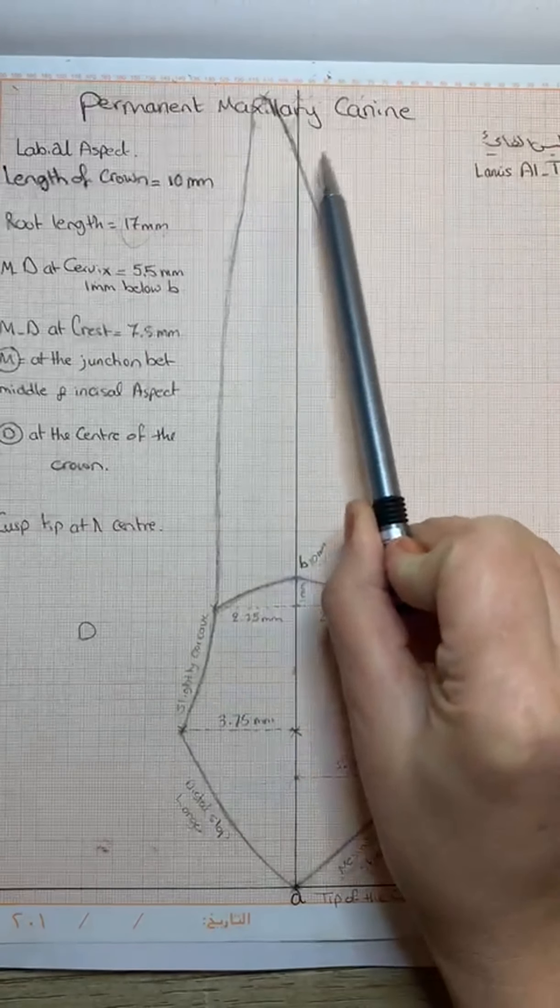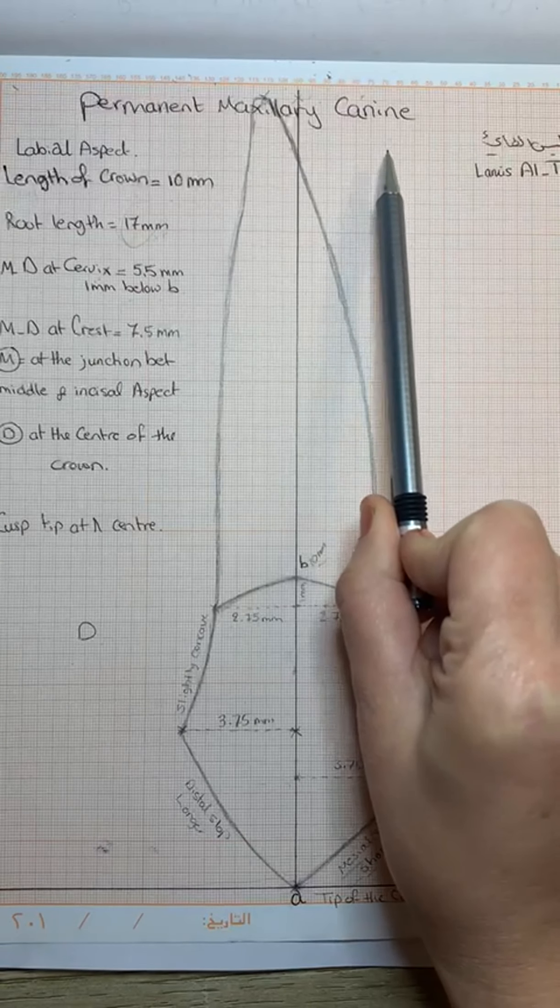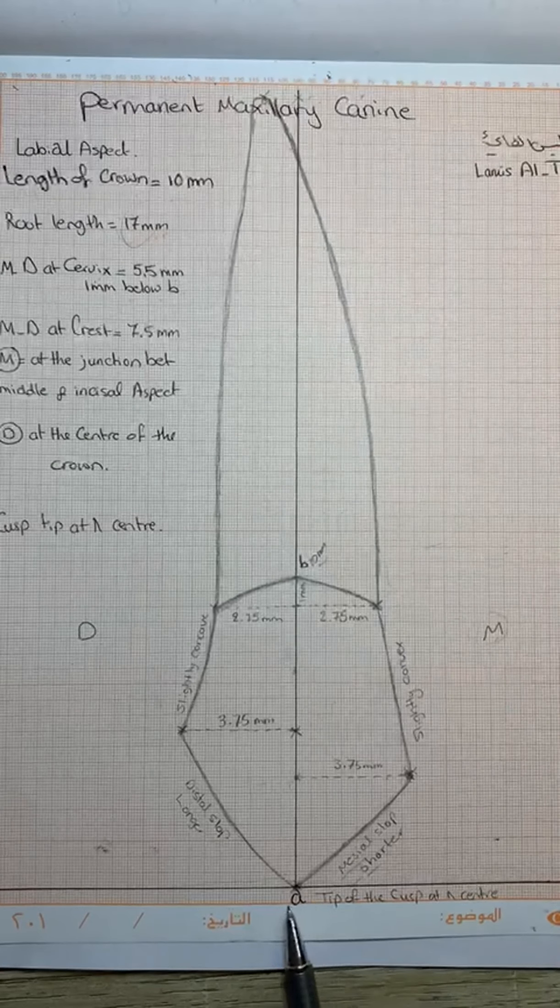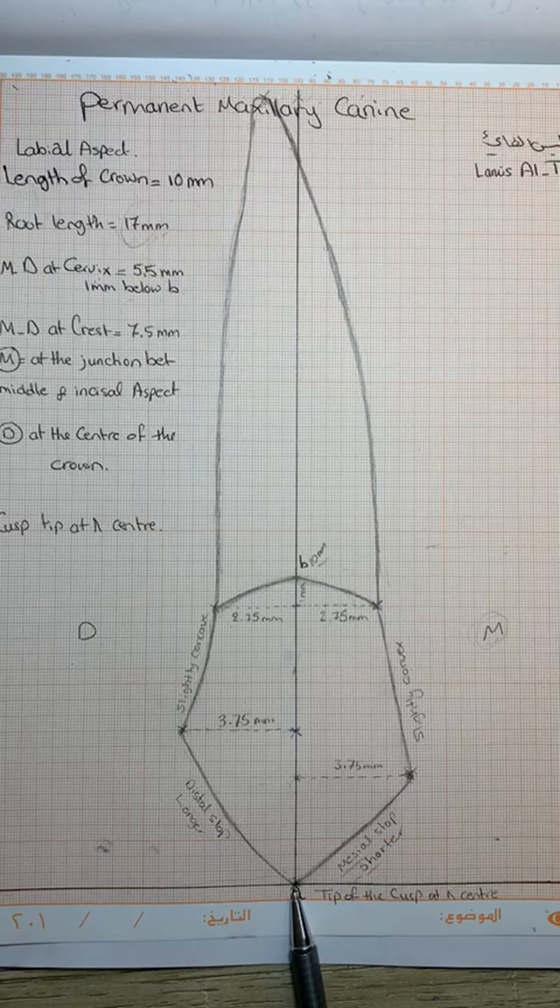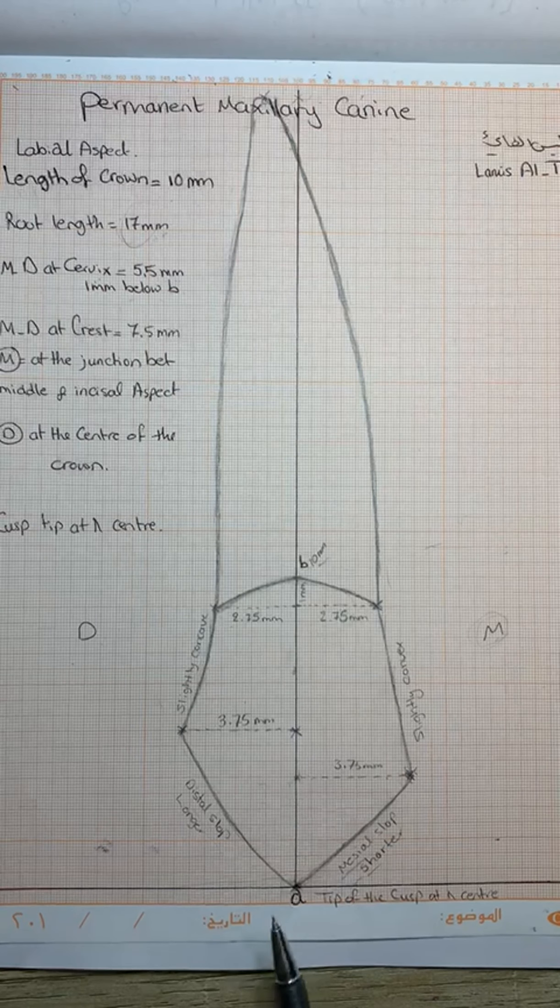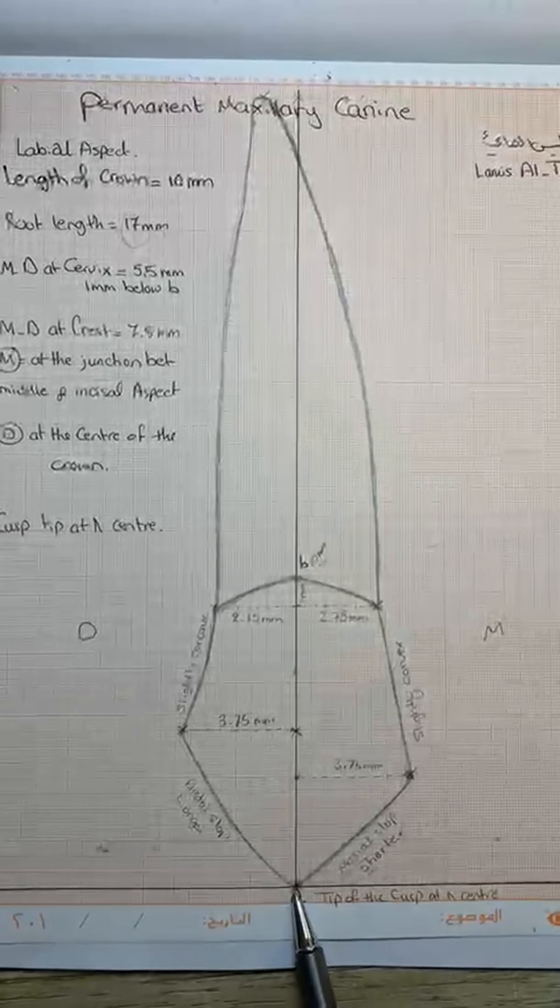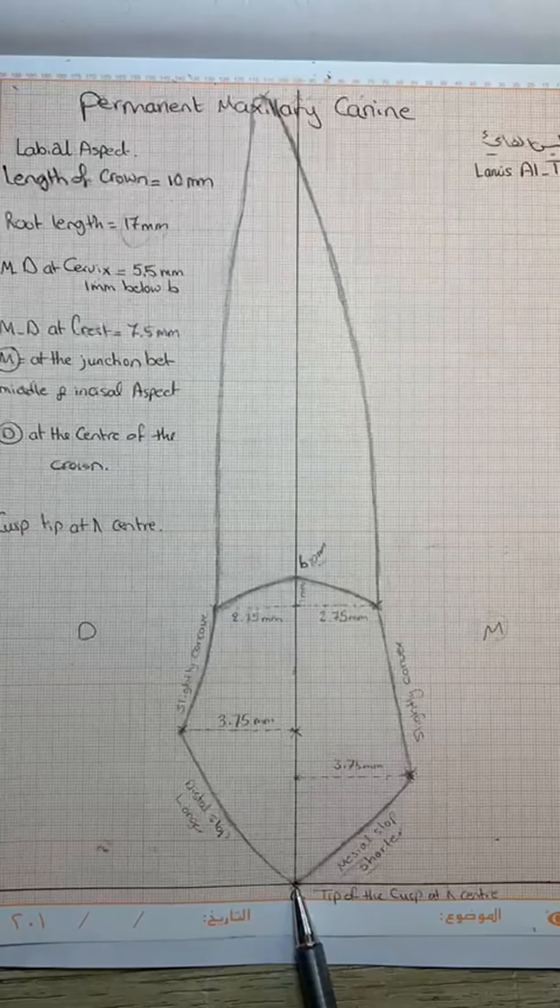Permanent maxillary right canine. Usually we start to draw the horizontal line, which is 0.5 mm from the end of the paper, and the vertical line. Then A will be the starting point for our drawing.